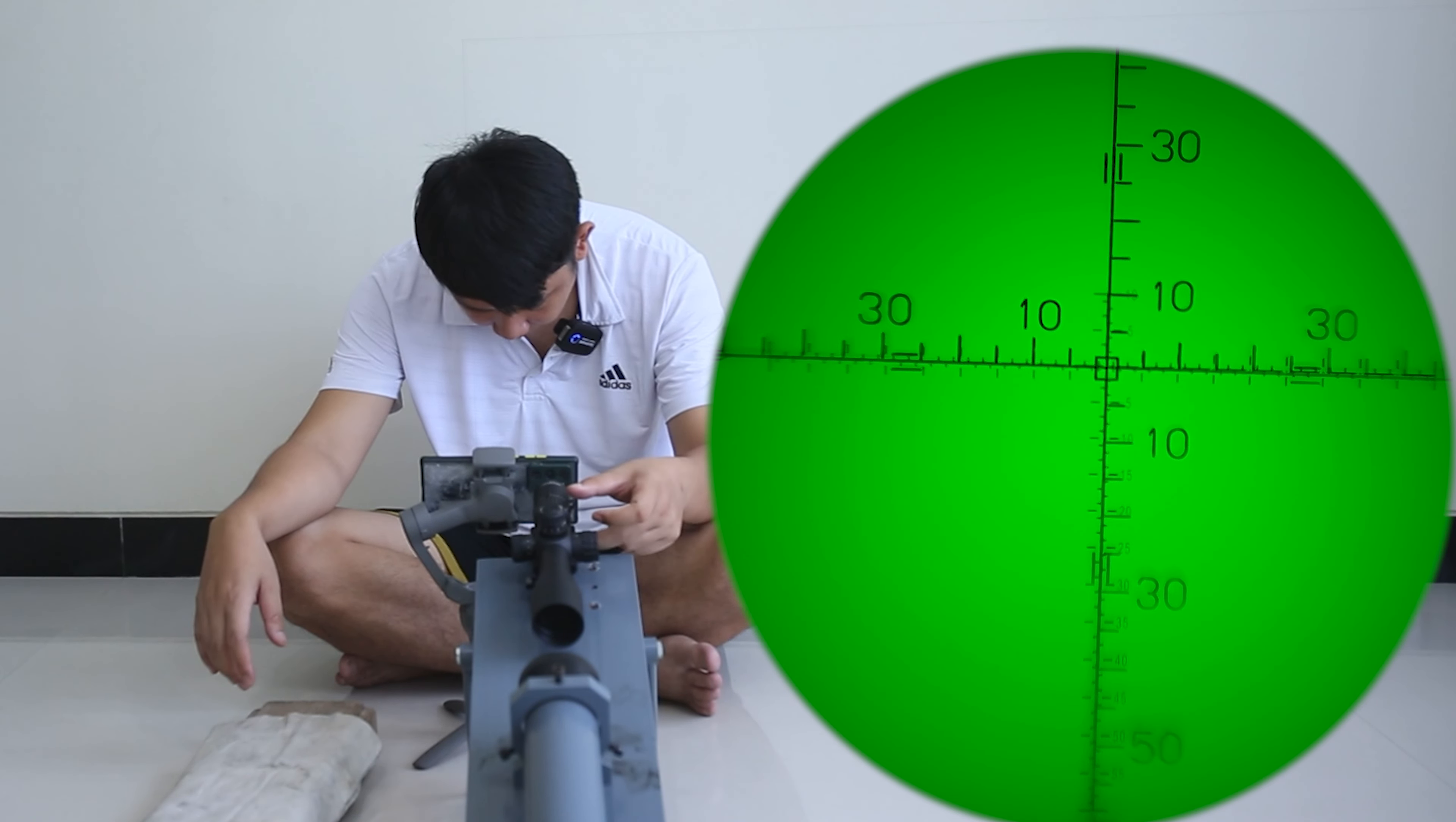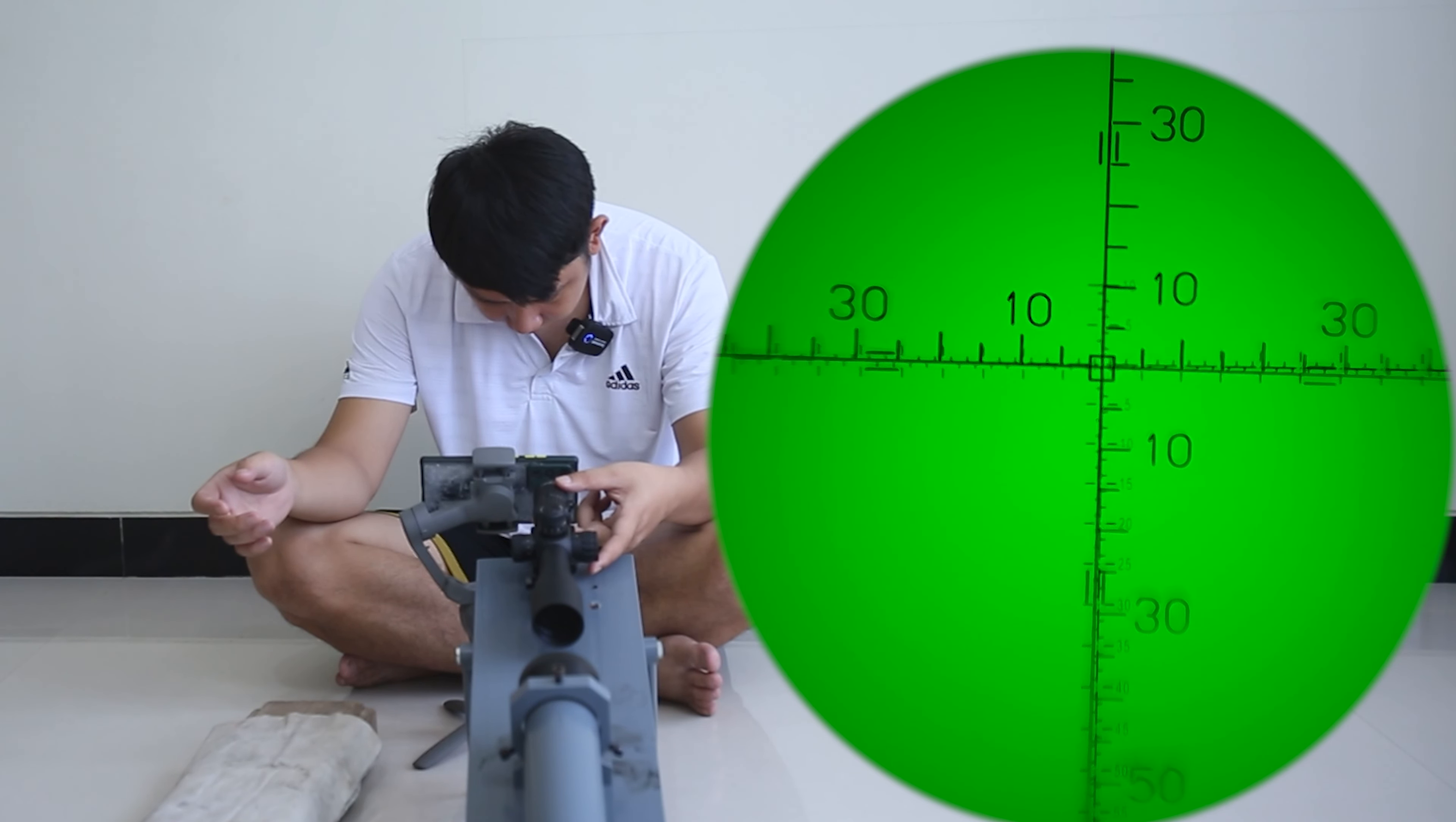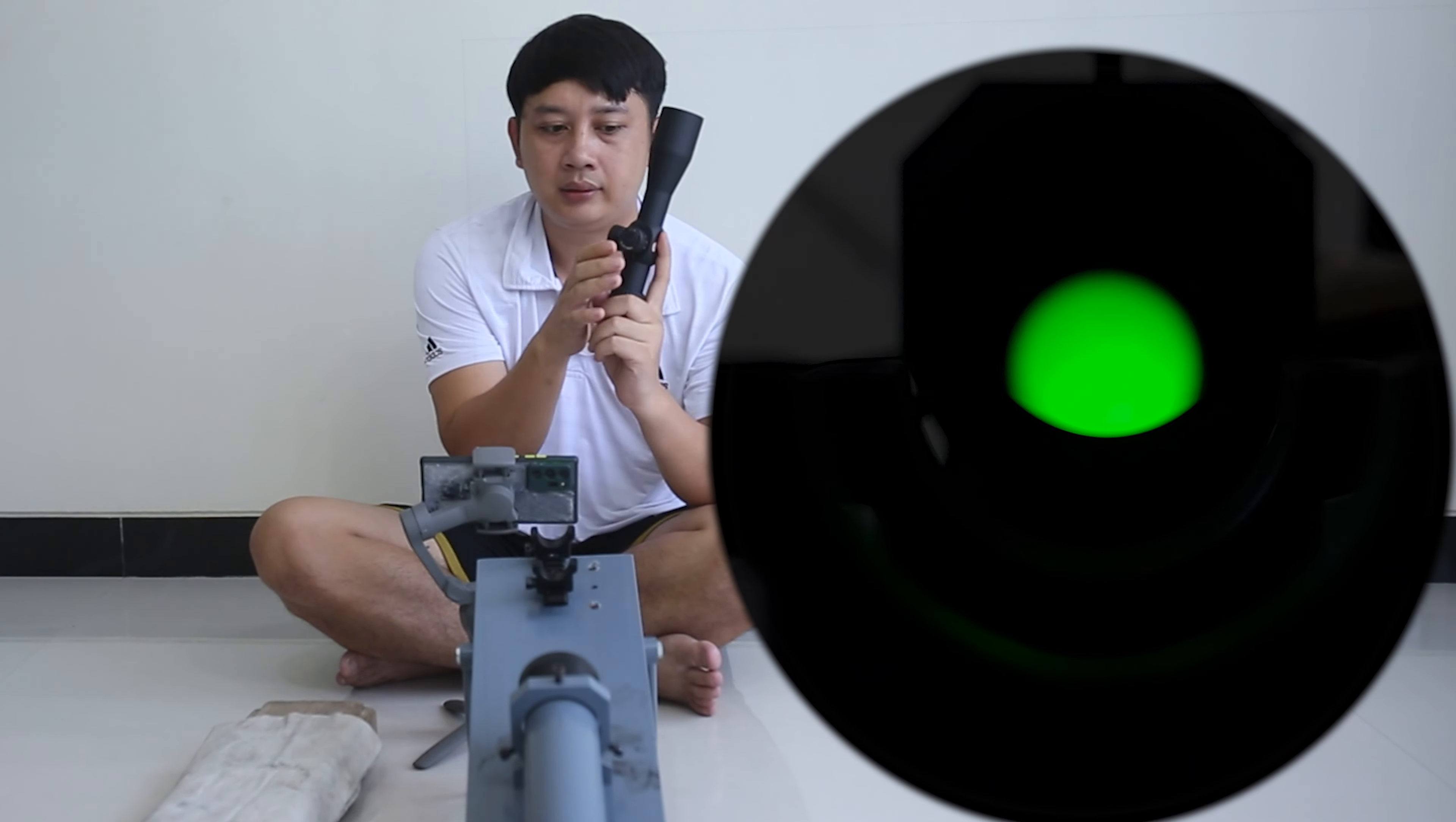Seperti ini ya, kita ambil tegak lurusnya. Kenapa kita ambil tegak lurusnya? Jadi ketika nanti kita hentakkan, dia akan kelihatan kalau sudah tidak tegak lurus atau ada pergeseran. Kita zoom dulu, kiri kanan lurus, atas bawah oke. Kalau sudah oke, sekarang kita lock. Tinggal push saja seperti ini, tekan. Kita tes lagi apakah ada pergeseran, oke masih tegak lurus ya.